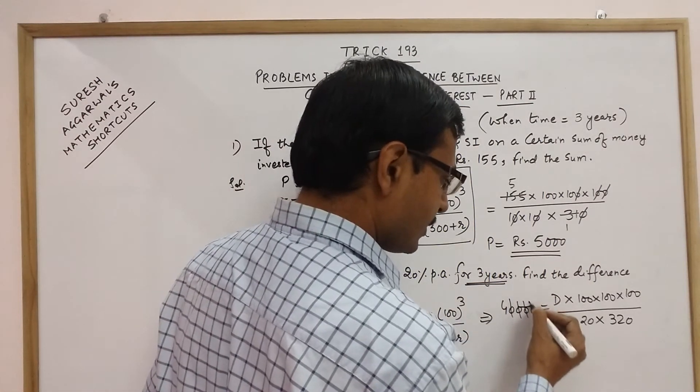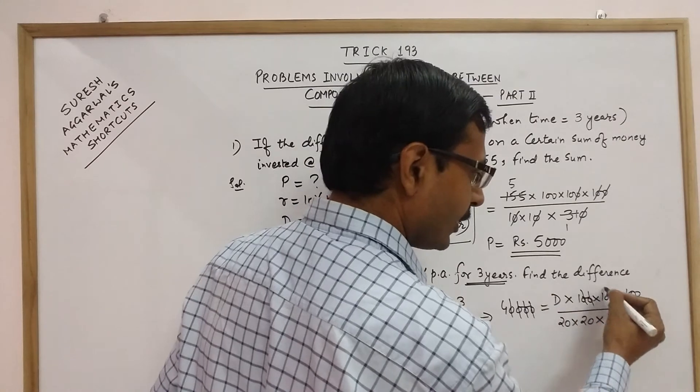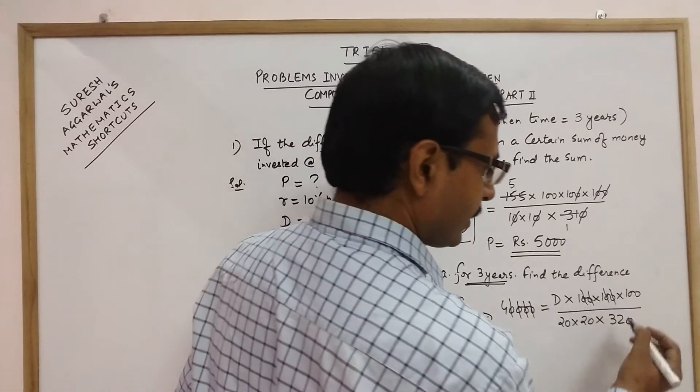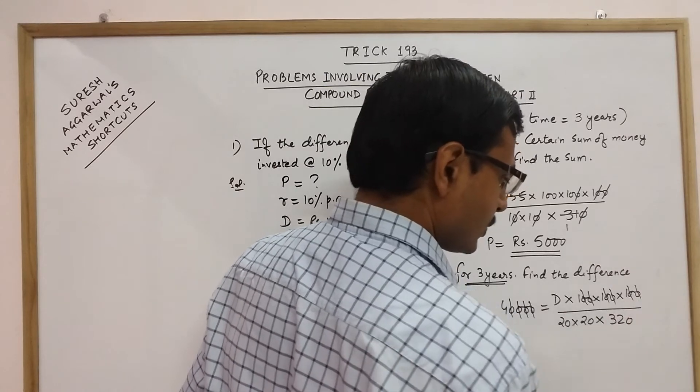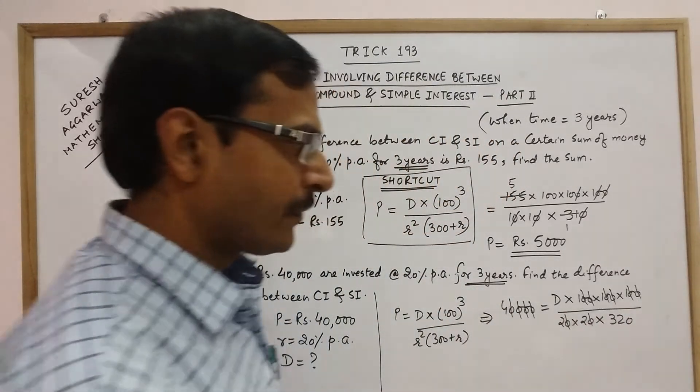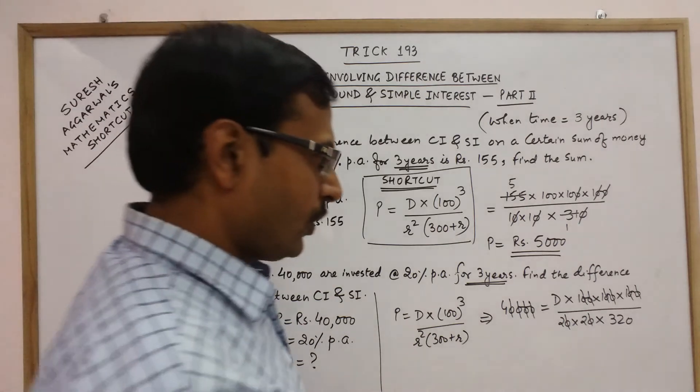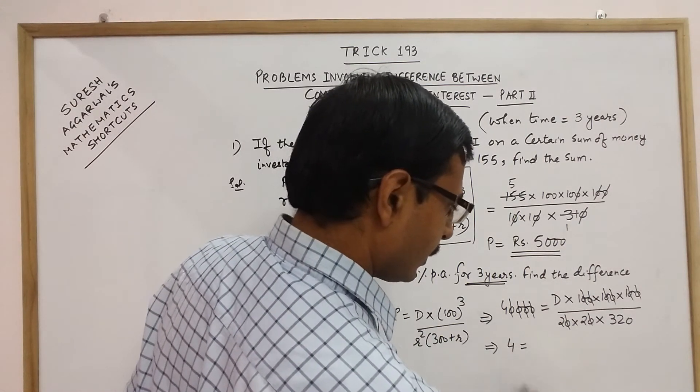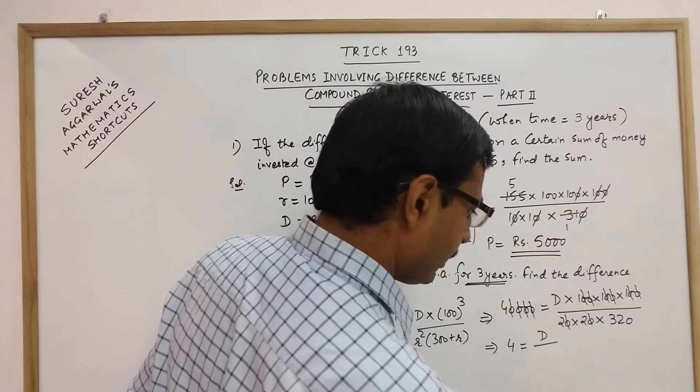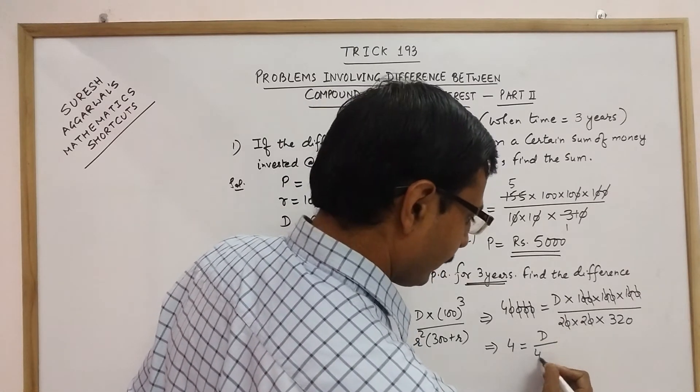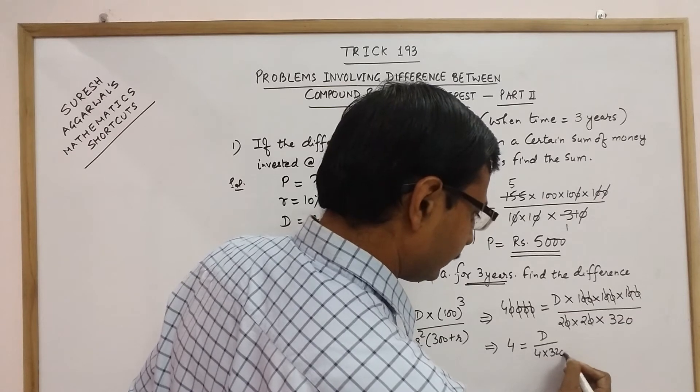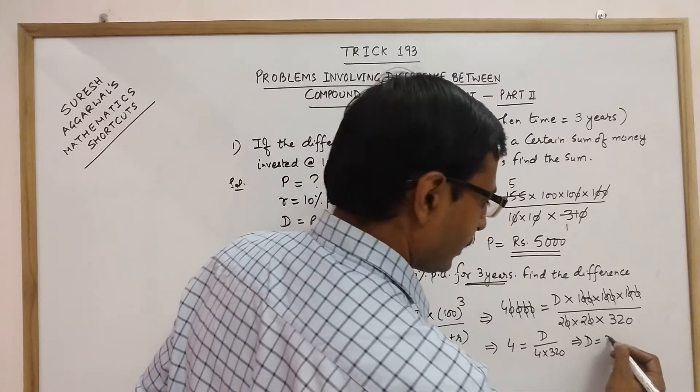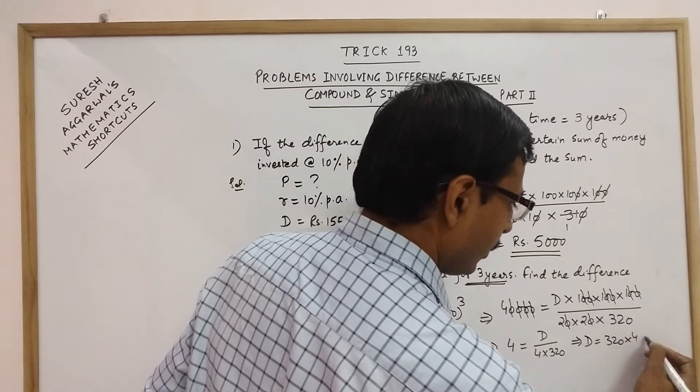Now in the numerator here you have 4 zeros, so you can cancel out 4 zeros with 4 zeros here in the numerator. Again 2 zeros here, you can cancel these 2 zeros also. And now what we are left with is 4 equal to D upon 2 into 2, 4 into 320. So D will come out to be 320 into 4 into 4.